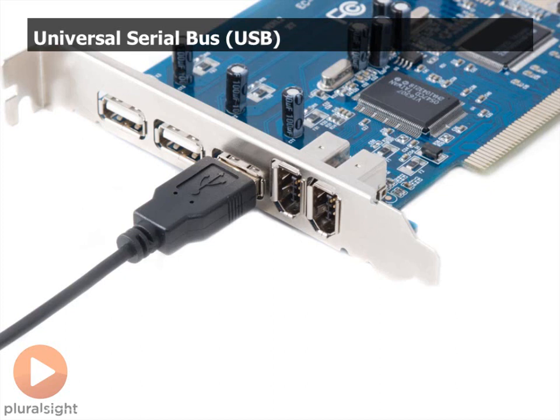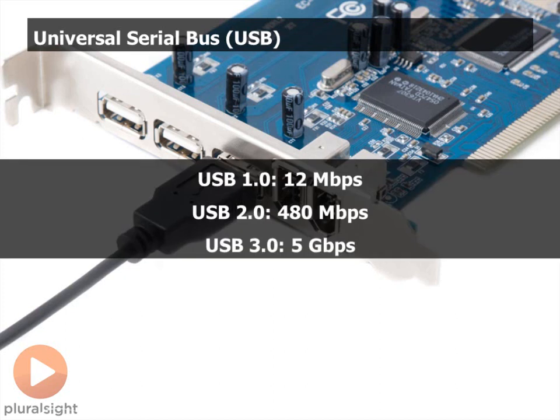USB has three different standards. There's USB 1, USB 2, and USB 3. USB 1 had a maximum speed — how fast we can transmit data back and forth — of 12 megabits per second. USB 2 could then do 480 megabits per second, and this was a big deal at the time.